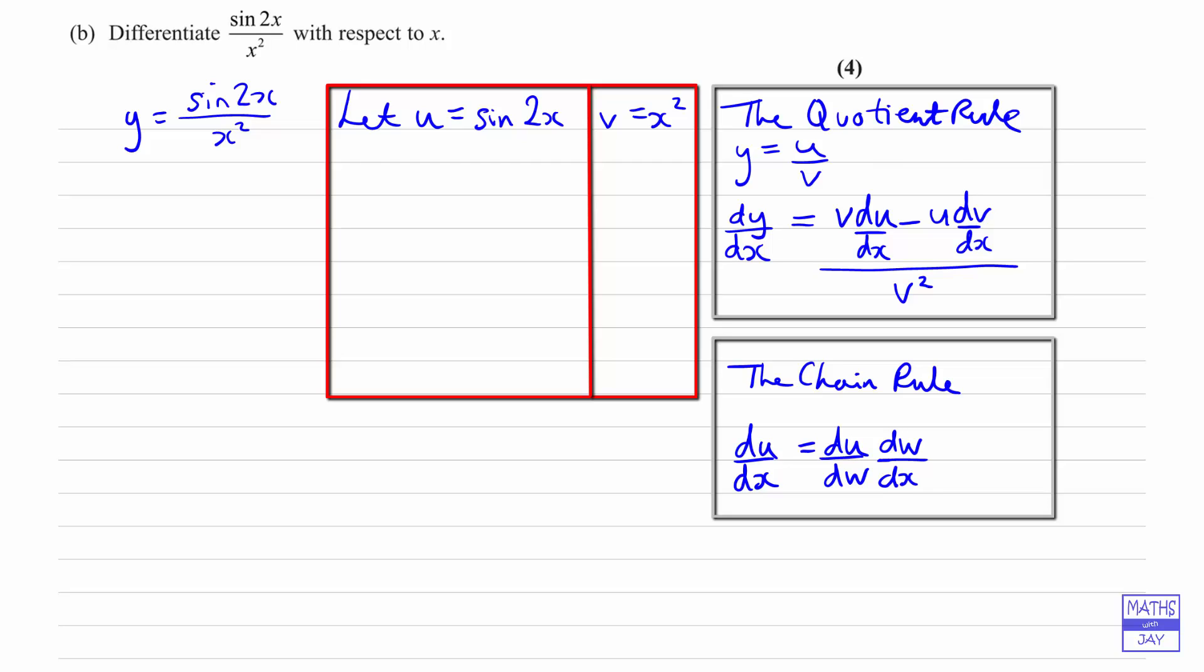What we'll do over in our example is let w be equal to 2x, and then we'll be able to work out du by dx because we can work out du by dw and dw by dx. So if w is 2x, then we can write down that u is sin w.